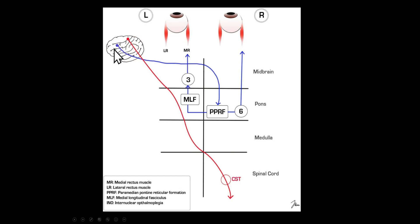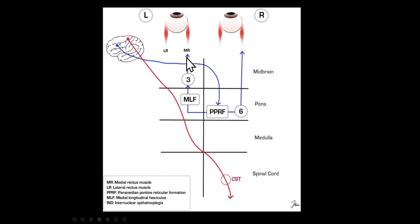How does the left frontal eye field area move your eyes to the right? It activates the opposite pons PPRF sixth-nerve complex. The sixth nerve is going to activate the lateral rectus to move the right eye to the right, and via the MLF — medial longitudinal fasciculus — this activates the third nerve nucleus to supply the medial rectus, so now the left eye also moves to the right. That's how the left brain moves the eyes to the right, and also the adjacent area will move your right arm and leg.